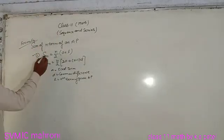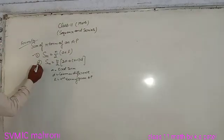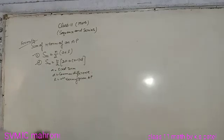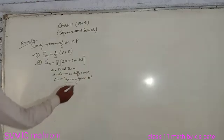Formula number first: Sn is equal to n/2(a+l). Second formula: Sn is equal to n/2[2a+(n-1)d], where a equals first term, d is equal to common difference, and l is equal to nth term of given arithmetic progression.